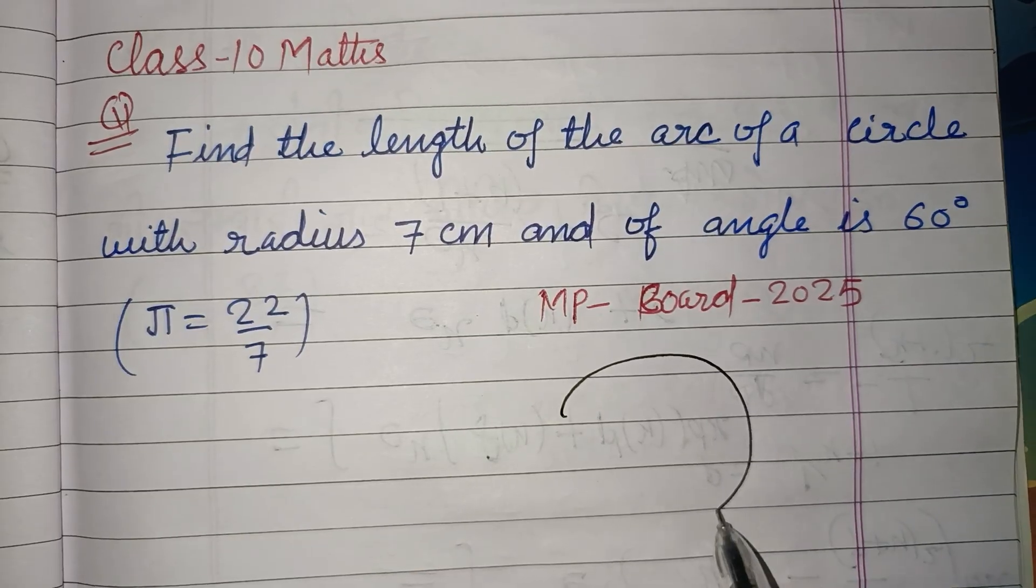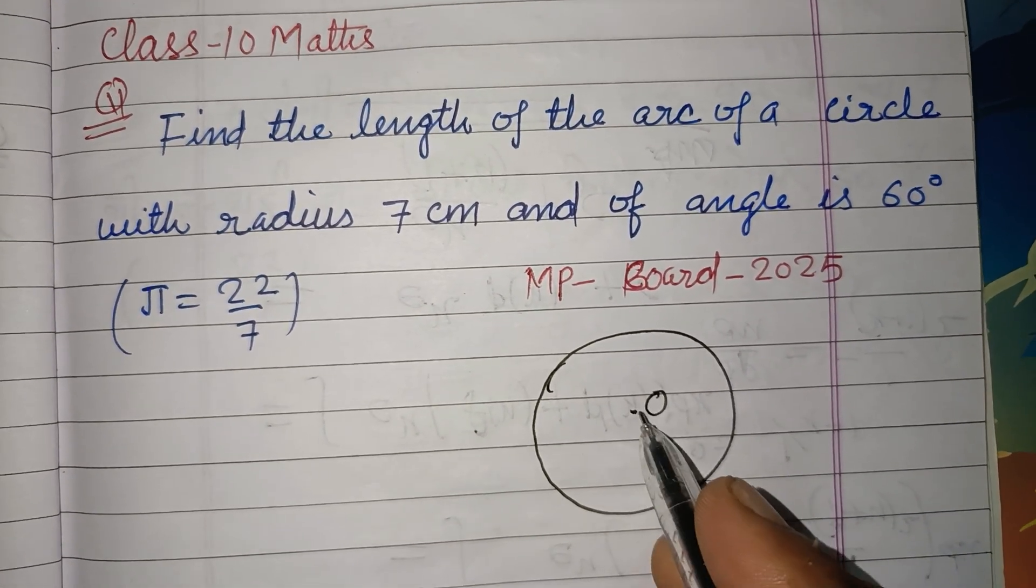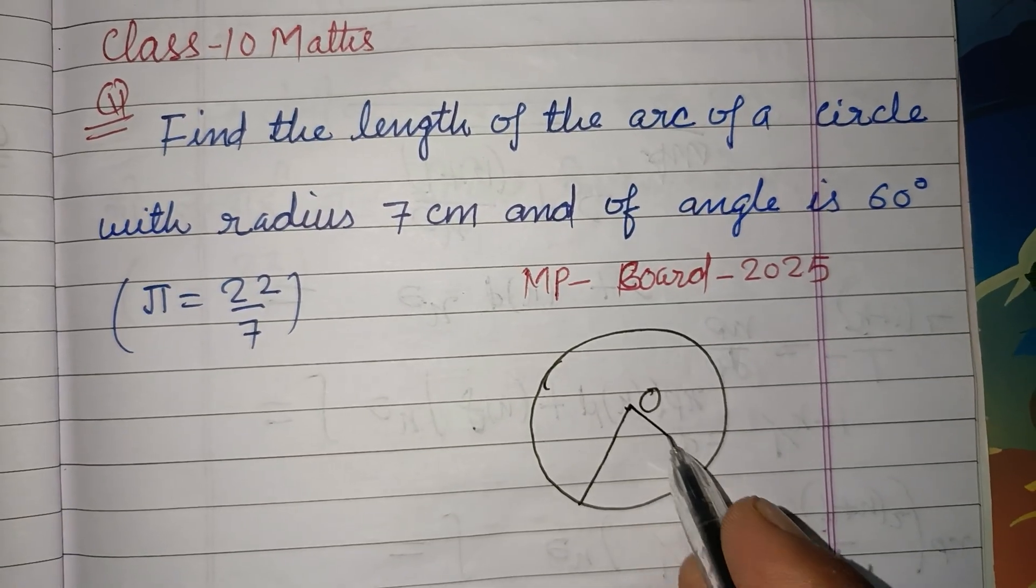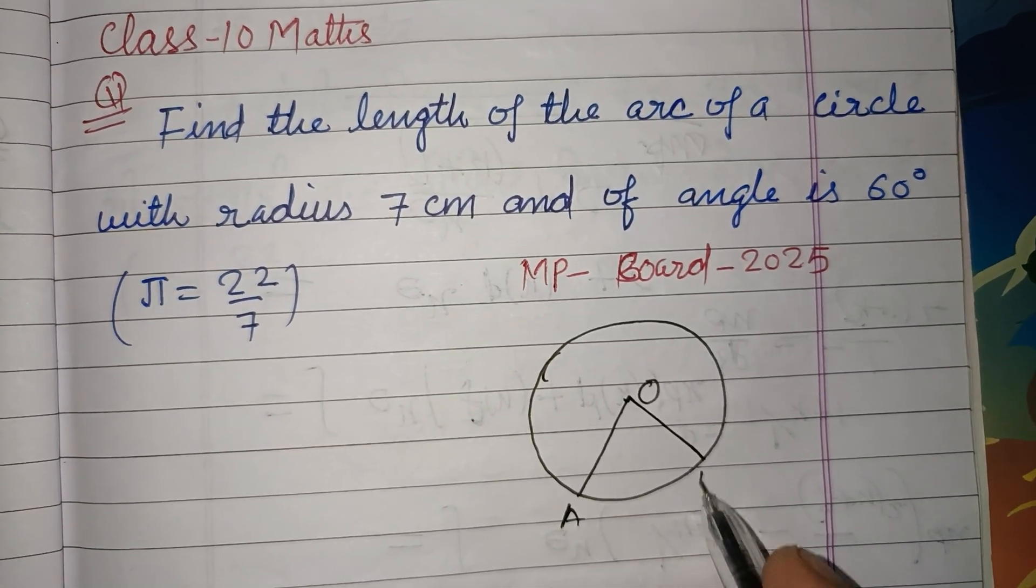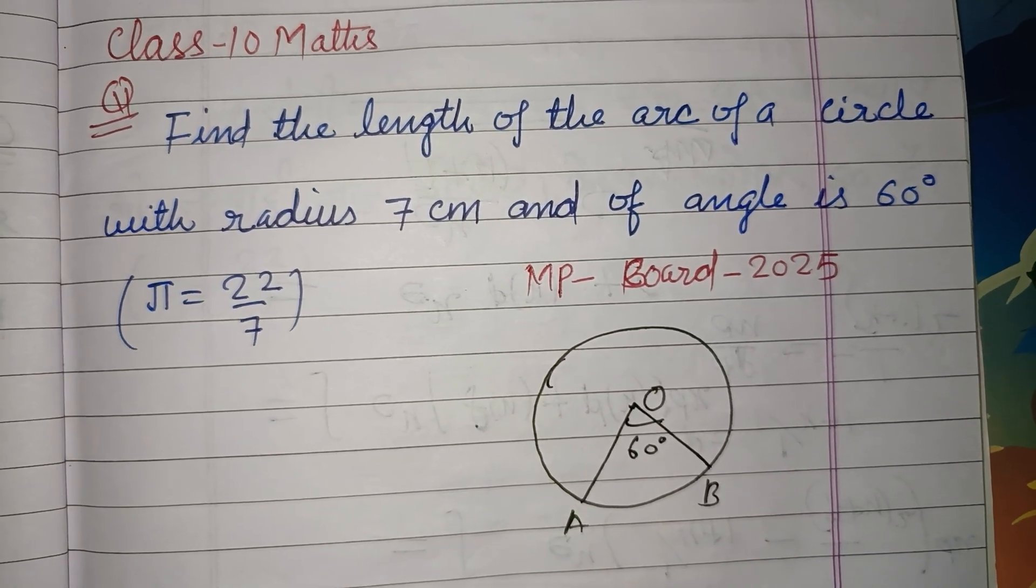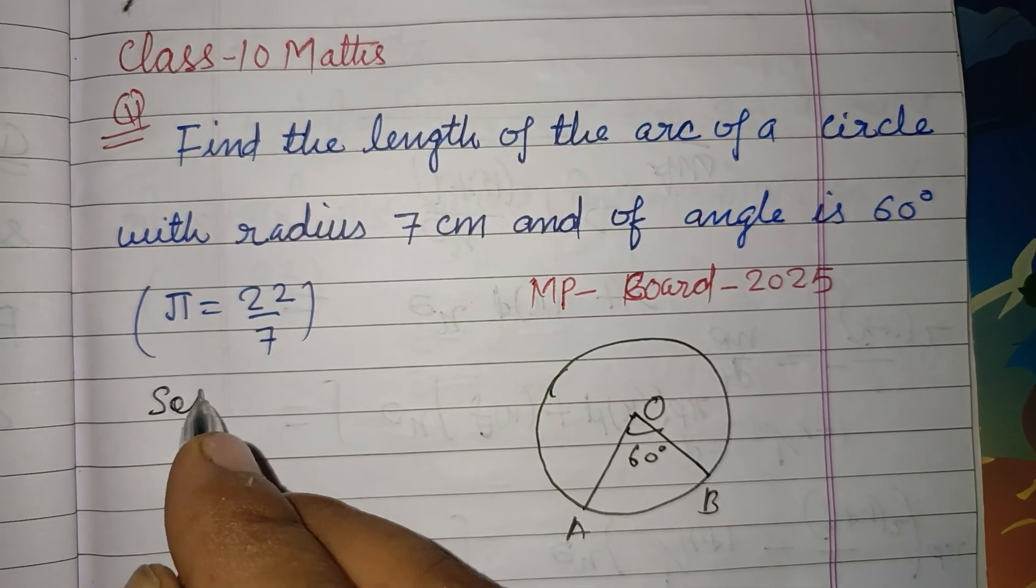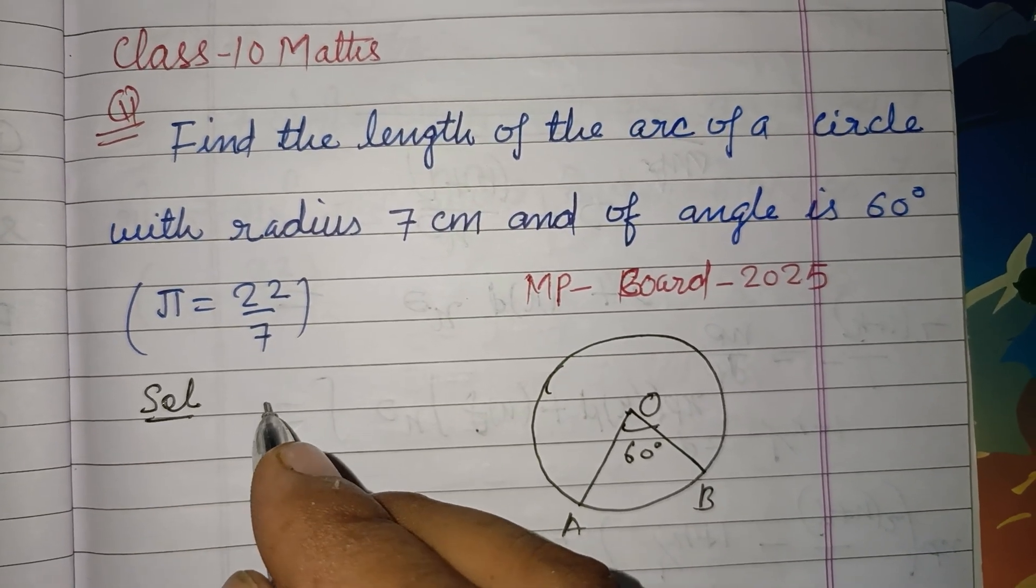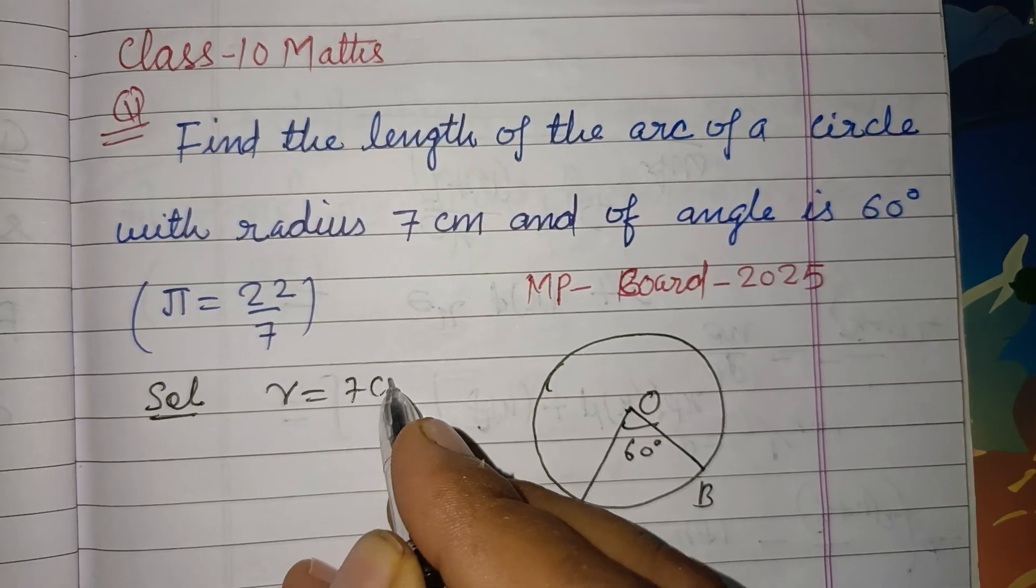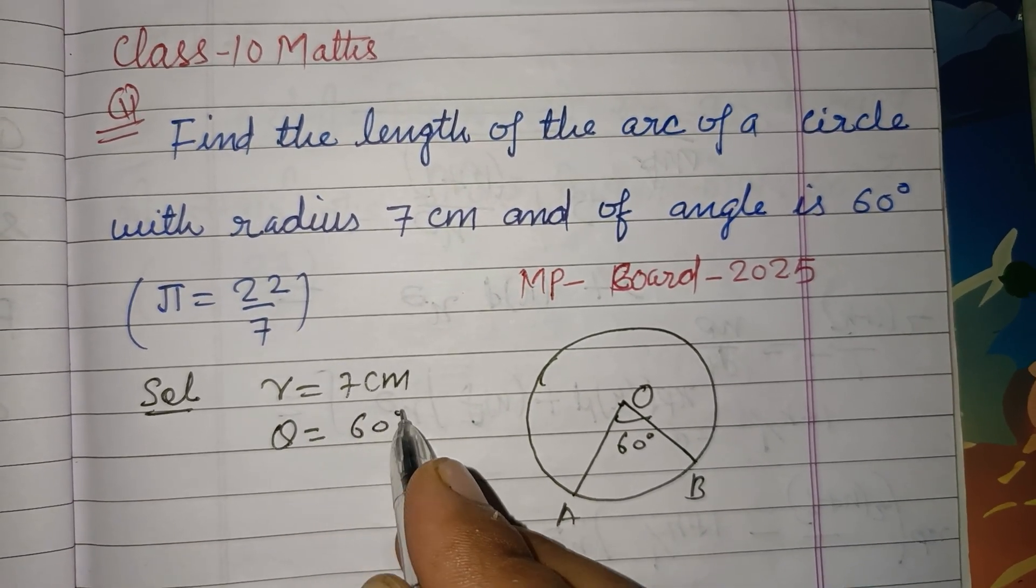An arc AB subtends angle 60 degrees at the center. So we have radius r equal to 7 cm, angle theta equals 60 degrees.